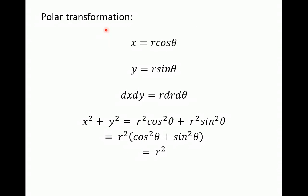To compute this double integral we use a polar transformation. We redefine the variables: let x = r·cos(θ) and y = r·sin(θ), so that dx·dy becomes r·dr·dθ. We can also see that x² + y² = r², because cos²(θ) + sin²(θ) = 1, which comes from the trigonometric identity.